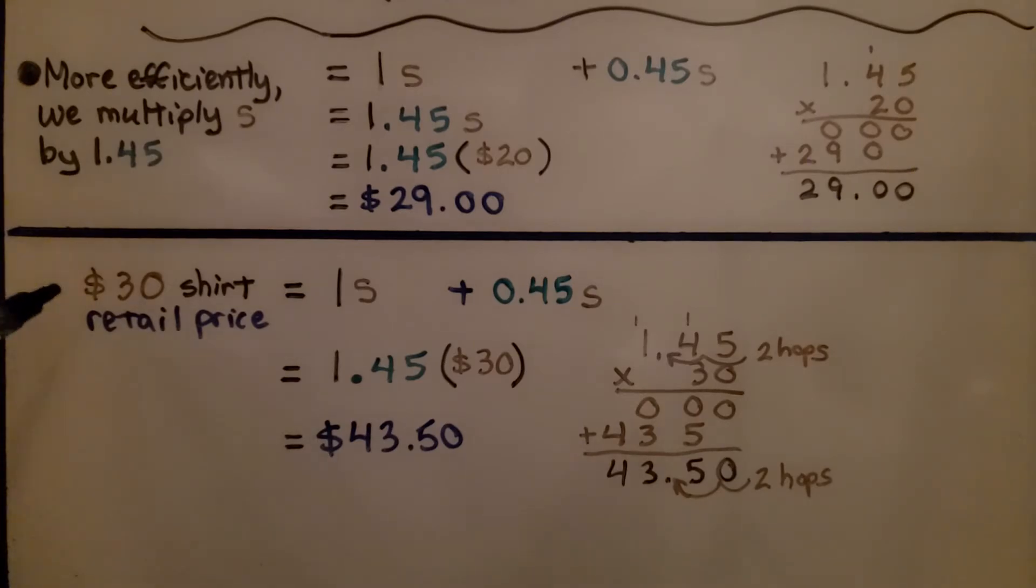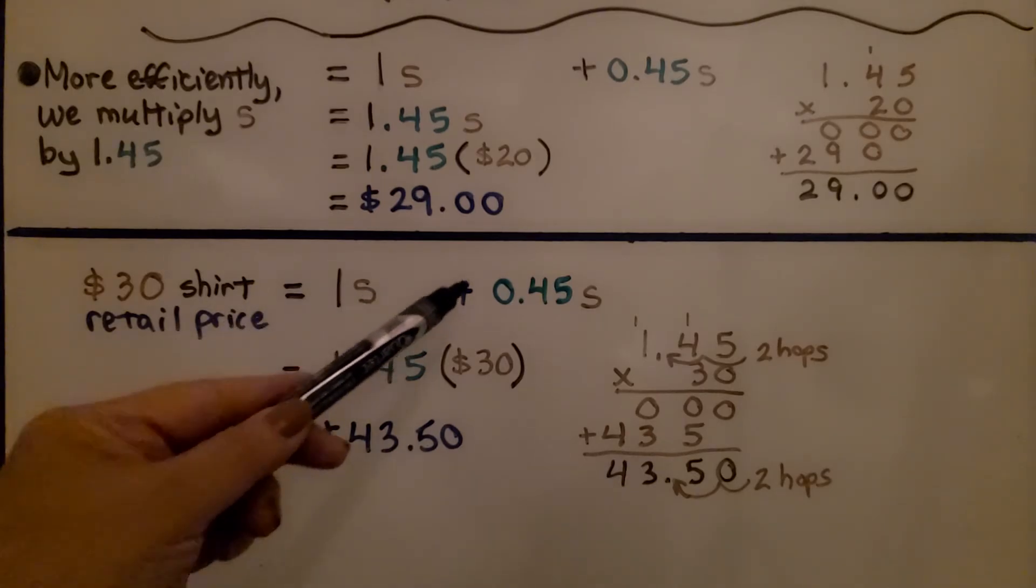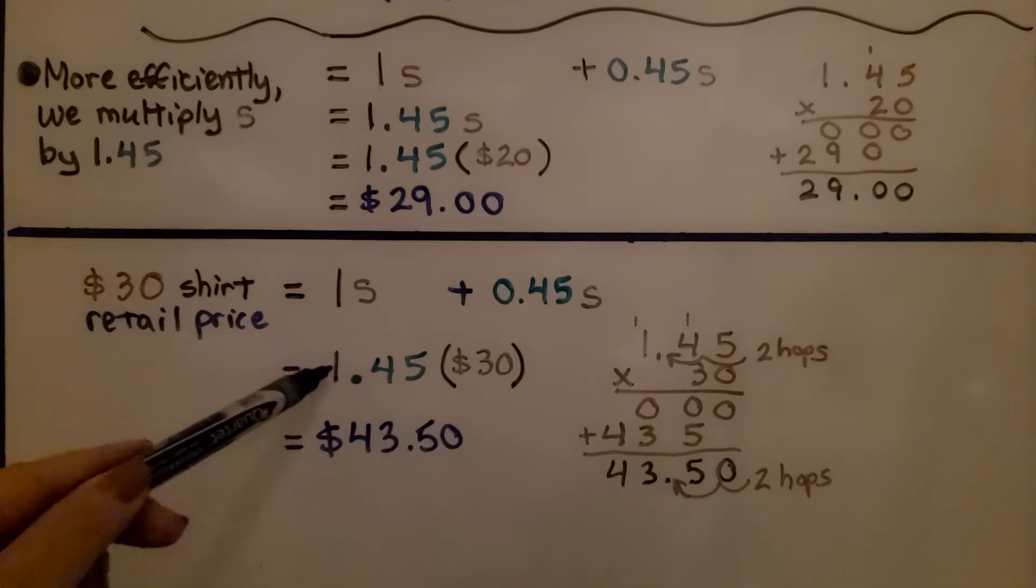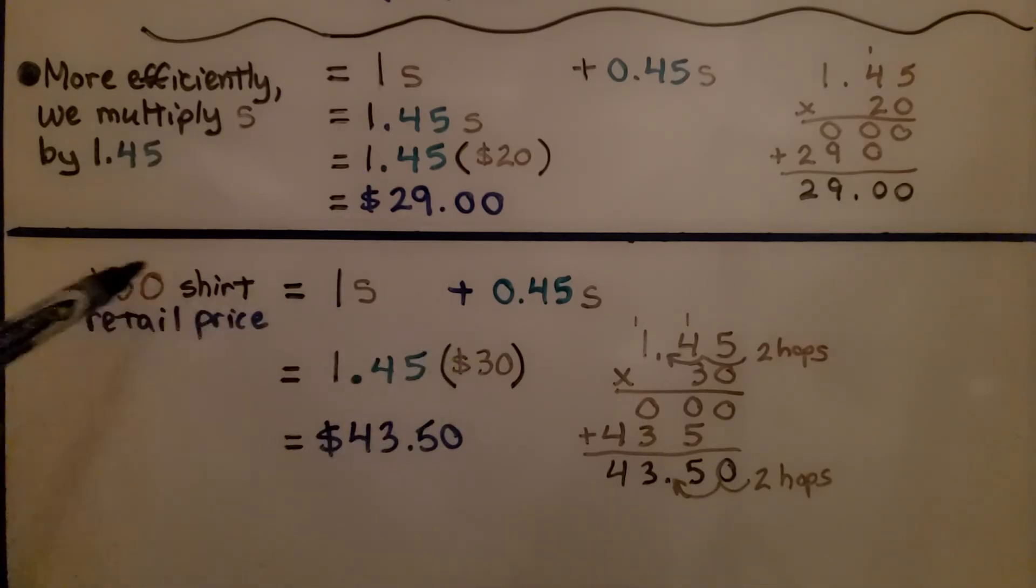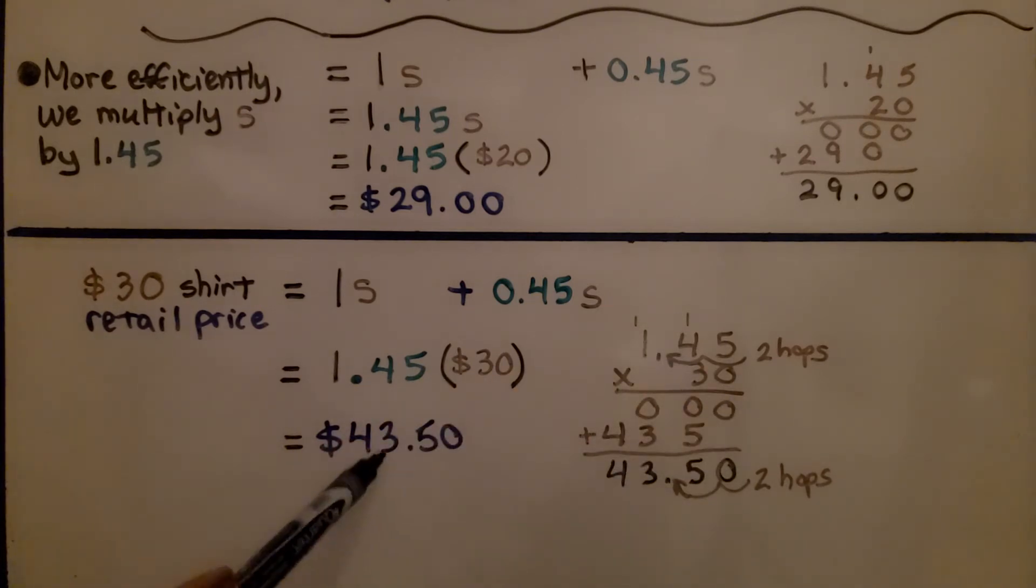For the other shirt that was $30 for cost, we have 1S plus 0.45S, which is 1.45 multiplied by the cost $30. We do it all together and get $43.50 for our retail price.